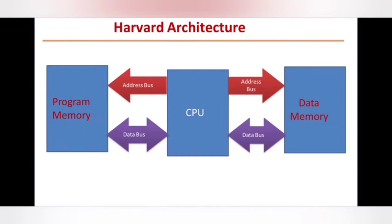The CPU is accessing the program memory and data memory separately through the data bus and the address bus. The memory processing speed is higher compared to the Von Neumann architecture, as the address bus and data bus are separate, though not as high as the Super Harvard architecture.